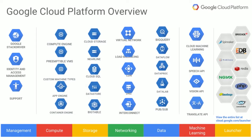Google Cloud Platform comprises a variety of products and services in the areas of compute, storage, data analytics, machine learning, and networking. All these services have REST APIs, and you can also access them through command-line interface as well as Cloud Console.